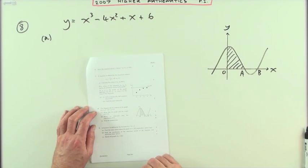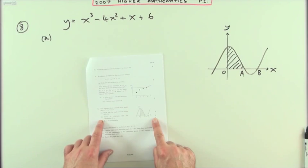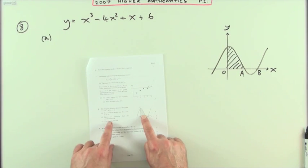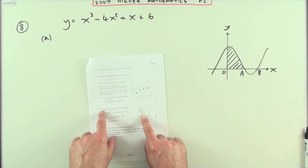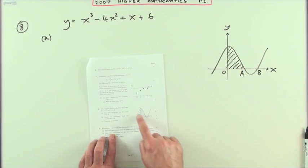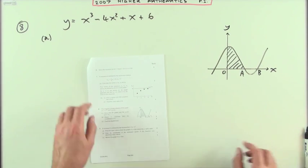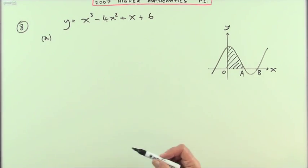Number 8 from the 2007 Higher Maths paper one. We've got a slightly longer question because there's nine marks in this one. There's an area and also with this cubic there's going to be solving or factorizing a cubic expression. But the first part is: show that the graph cuts the x-axis at (3,0).